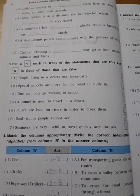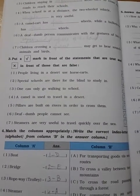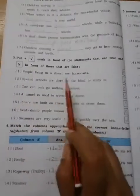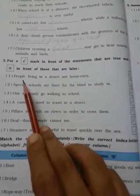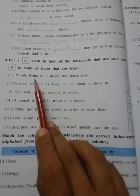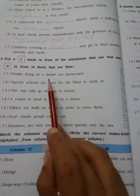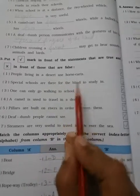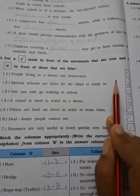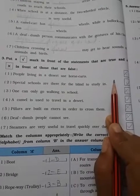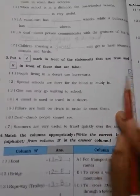After this, this is true and false. The question number three is true and false. You have to tick or you have to cross. People living in the desert use the horse cart. In desert? No, desert uses camel. So answer will be wrong.